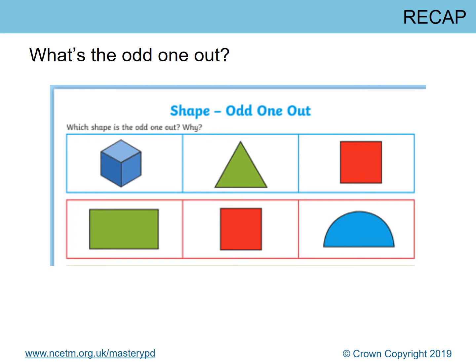Hopefully you've had a think about which one is the odd one out. You might have said, in the blue section, I think the odd one out is the cube, because the cube is the only 3D shape and the triangle and the square here are 2D shapes. Fantastic.